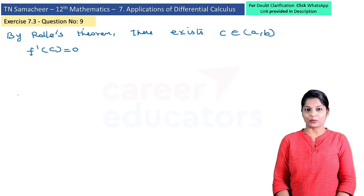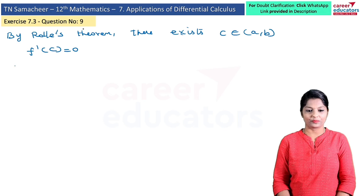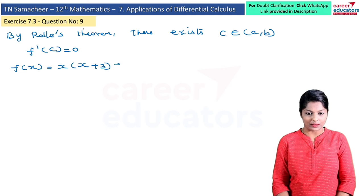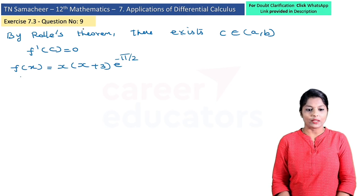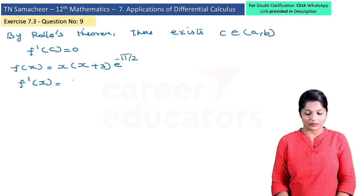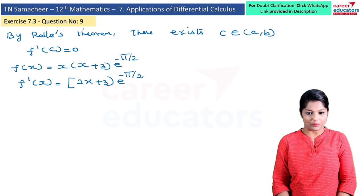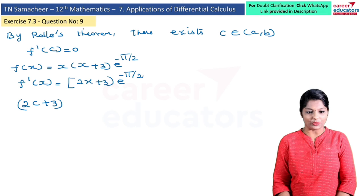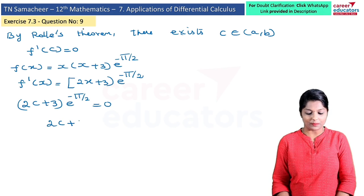We differentiate f(x) = x(x+3)·e^(−x/2) and set the derivative equal to zero. Differentiating gives f'(x) = (2x+3)·e^(−x/2). Setting f'(c) = 0: (2c+3)·e^(−x/2) = 0, so 2c + 3 = 0, which gives 2c = −3.